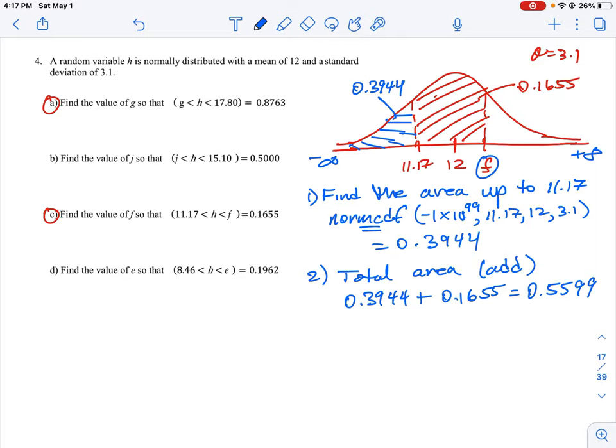So now all we have to do is pinpoint what that number is. So that number, we have to now use the inverse norm function, because we know that the area we're interested in—0.5599—all the way up to that point is going to give us the value for F. So then we plug in our mean and then our standard deviation, and when we work that out on the calculator, we find this number is 12.46. So F in this case here is 12.46—that's the upper boundary.